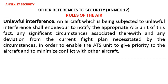As per rules of the air, an aircraft which is being subjected to unlawful interference shall endeavour to notify the appropriate air traffic service unit of this fact, any significant circumstances associated therewith, and any deviation from the current flight plan necessitated by the circumstances, in order to enable the ATS unit to give priority to the aircraft and to minimize conflict with other aircraft.